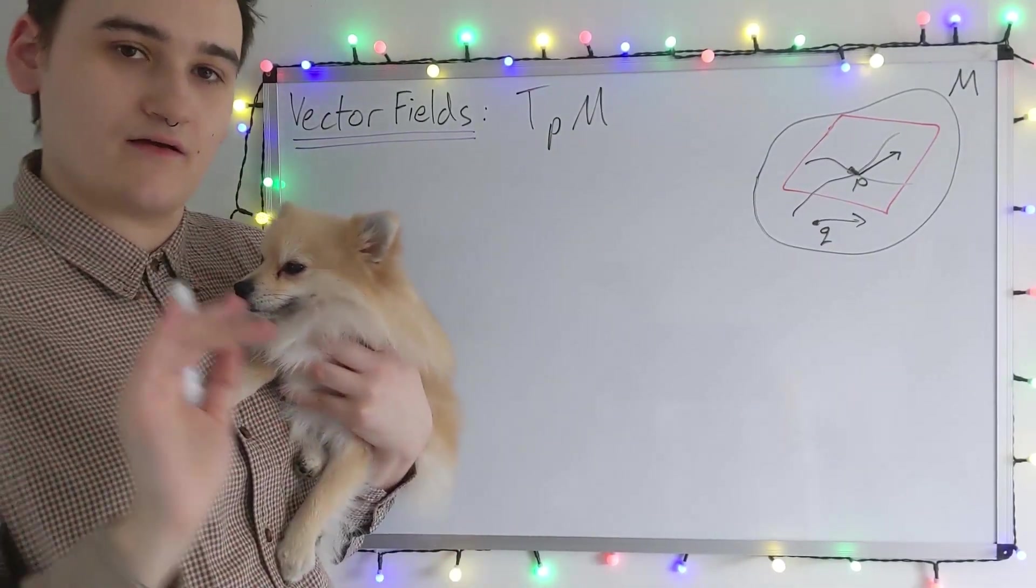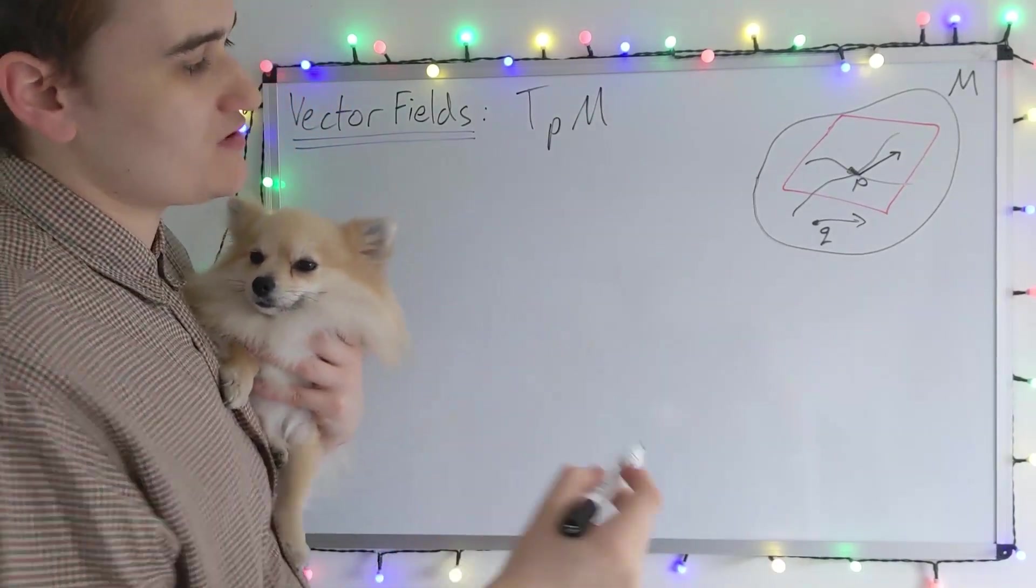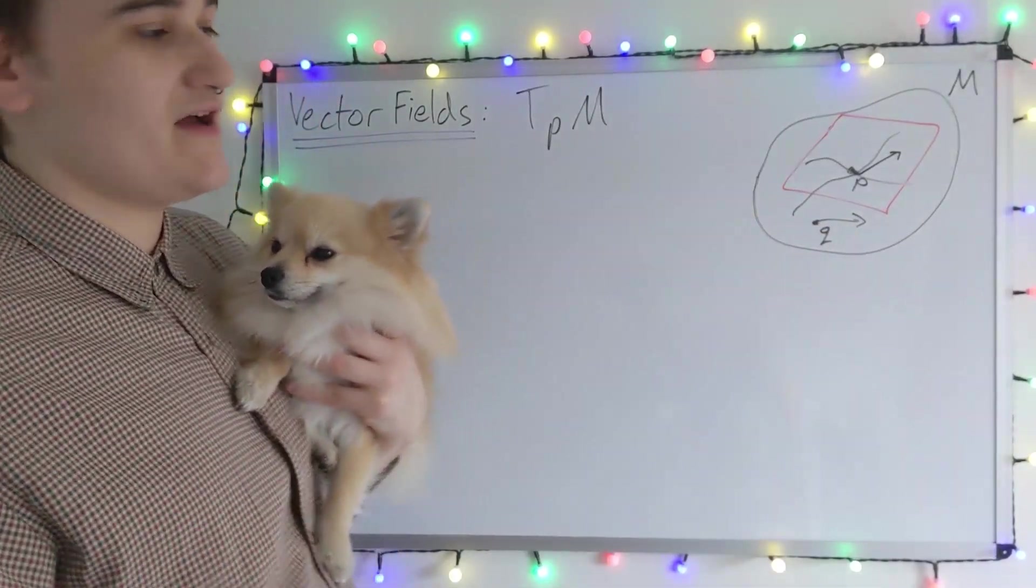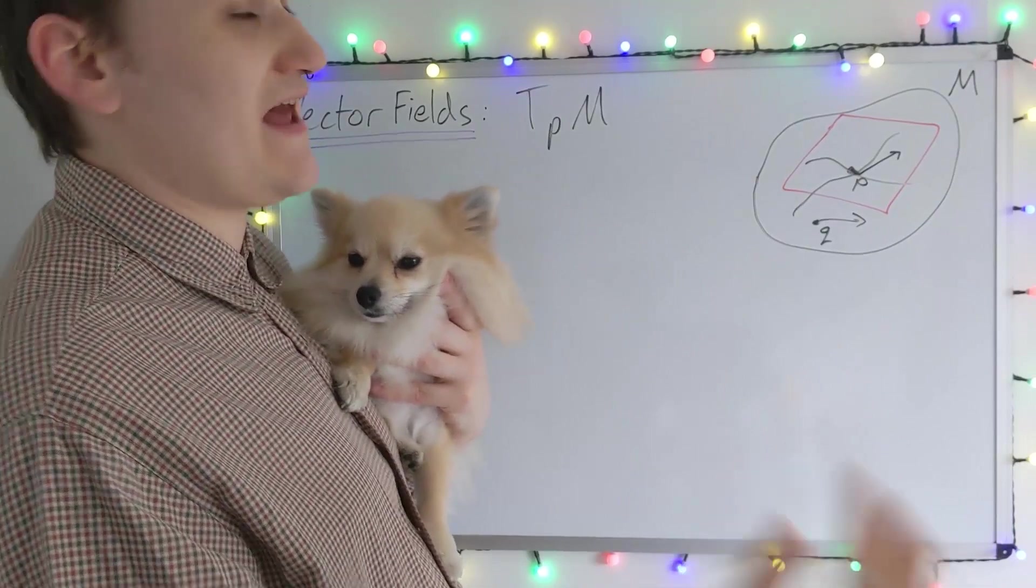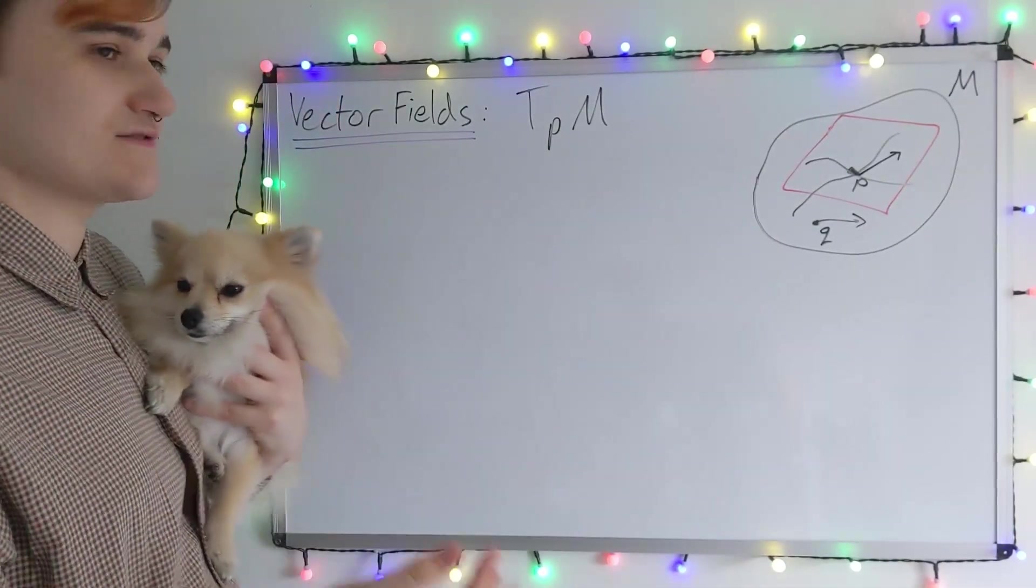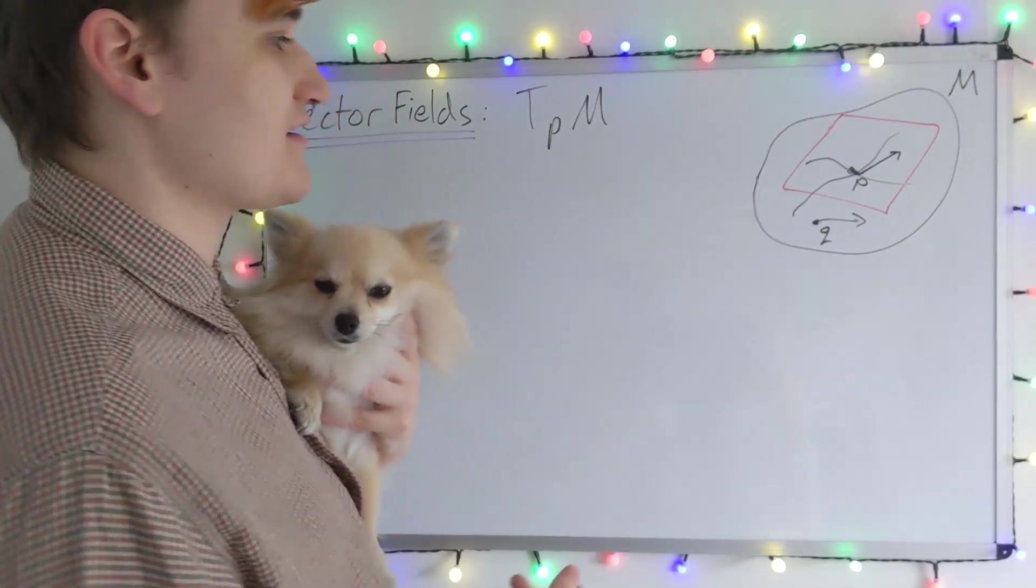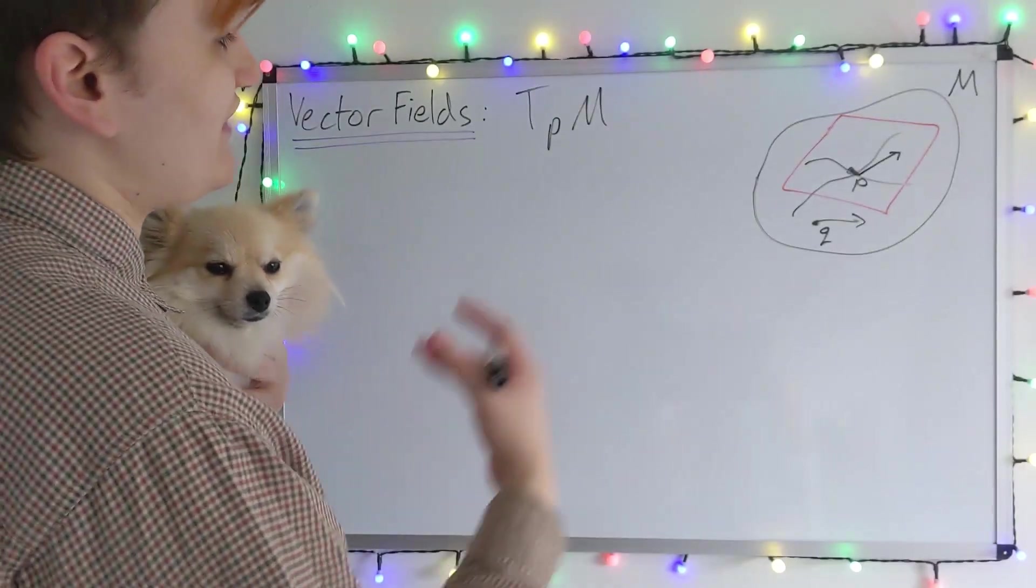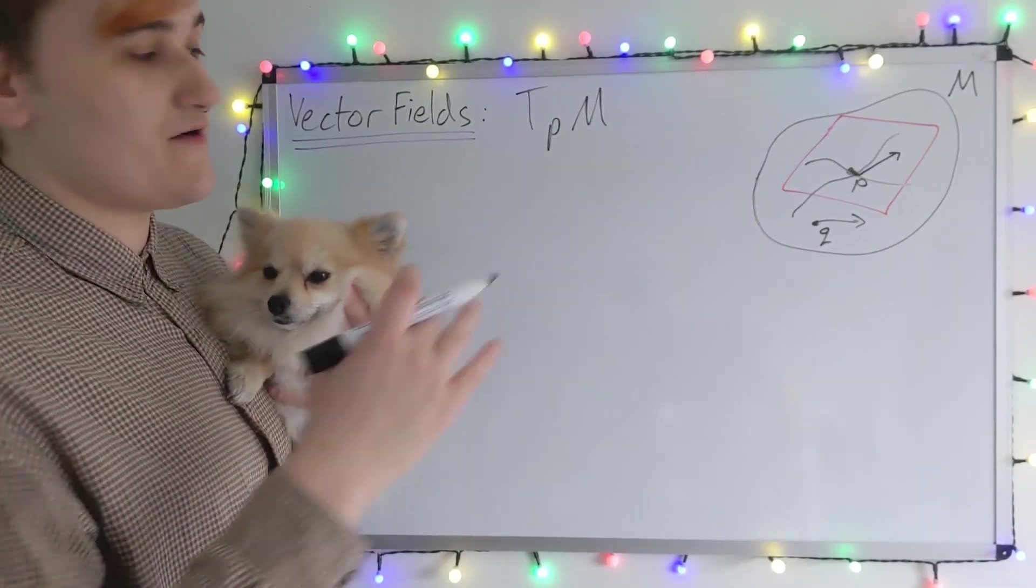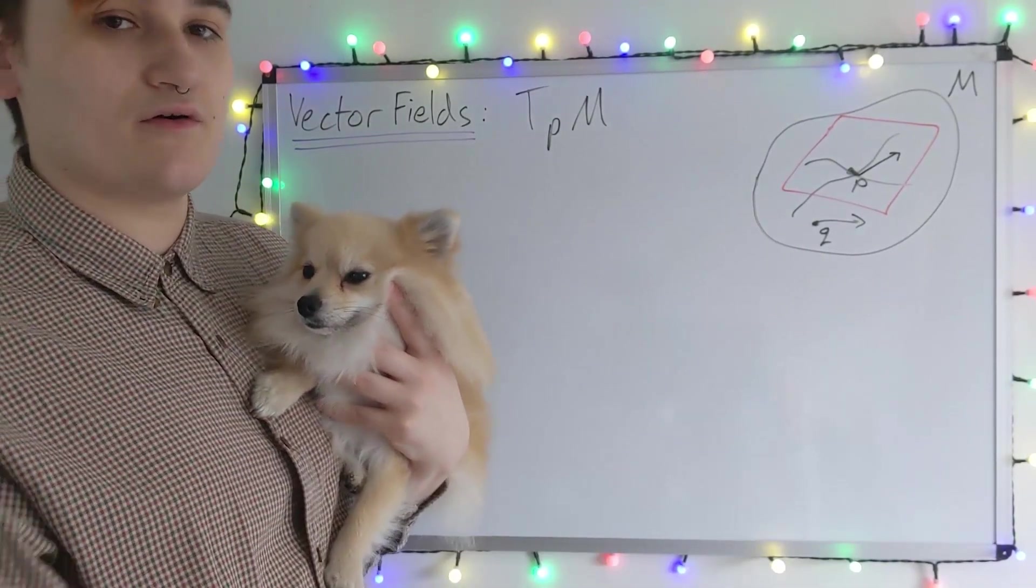We'll see later on how we can have a way to talk about the vectors of nearby tangent spaces using something called the connection, which is going to be vital for us when we want to define something known as the covariant derivative. But for now I'm just going to discuss how we can talk about a vector over the entire manifold or a vector field.